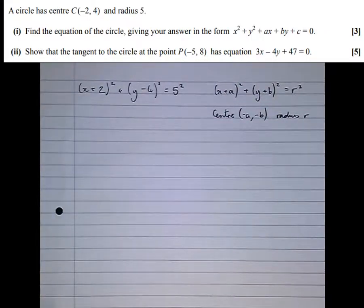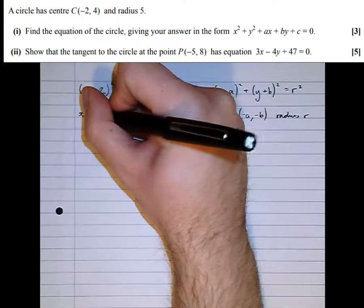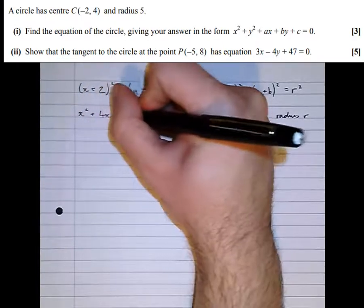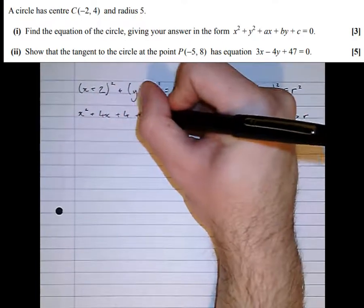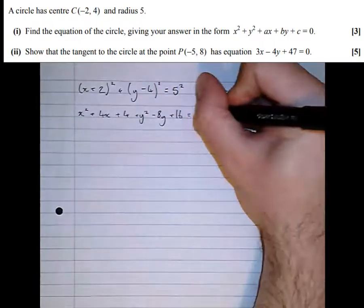We've got the equation of the circle, however it's not in the required form. If we multiply out the brackets, we get a step closer: x² + 4x + 4 + y² - 8y + 16 = 25.